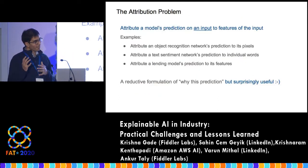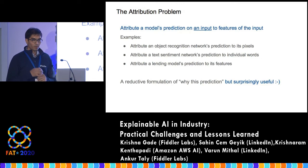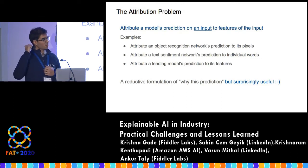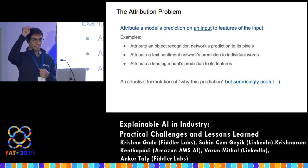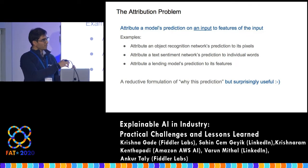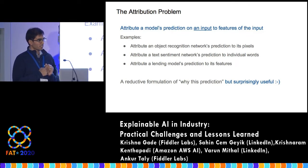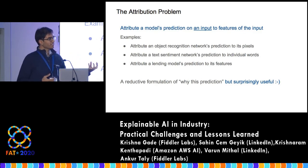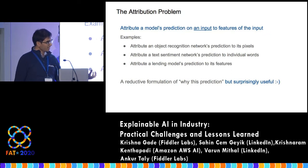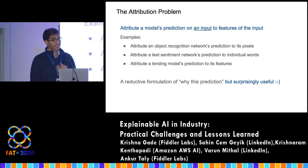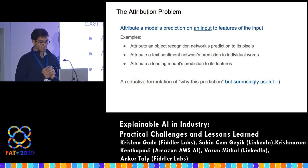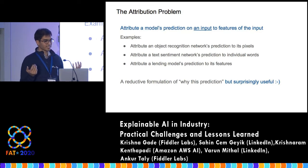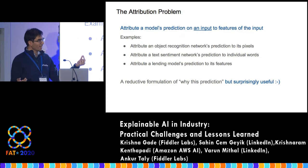These why questions are really open-ended, so we want to pin them down to something concrete — the attribution problem. We phrase it as: attribute this prediction to input features such that the attribution to each feature is proportional to its contribution to the prediction — essentially feature importances. In an image classification model, you attribute the prediction to pixels. In a text model, to words. In a tabular model like a lending model with features such as income, mortgage, and debt-to-income ratio, you attribute to those features. This is a reductive formulation, but it's surprisingly useful.